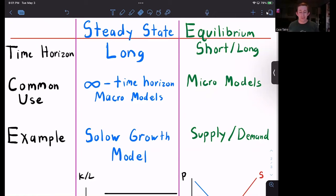So when we're talking about a steady state, we're generally talking about it in the context of a long run steady state. We're generally talking about the long run, versus an equilibrium where we could be talking about the long run as well, but generally we're more geared towards a short run equilibrium.